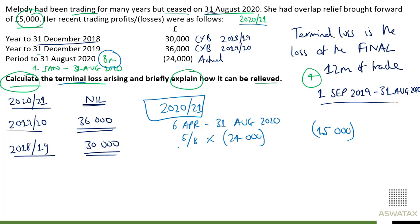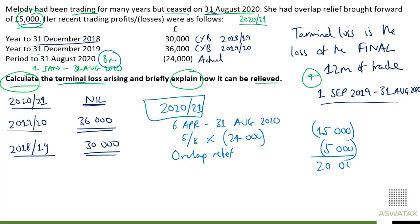We then offset the overlap relief. Overlap relief usually reduces profits, but in this case it can increase the loss — which is a good thing. We add £5,000 of overlap relief, and for your information, overlap relief can also turn a profit into a loss. This gives us a total of £20,000 for the 2020-21 portion of the terminal loss.